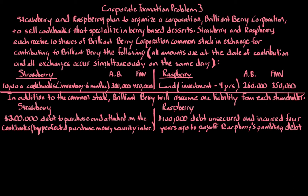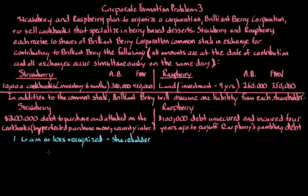This is a corporate formation or contribution problem. Whenever we have a corporate formation or contribution problem, we always have to go through our six steps. The first step is always to determine the gain or loss recognized by the transferor shareholder. Here we have two transferor shareholders — we have to look at both Strawberry and Raspberry. The second step is to determine the adjusted basis of stock and property received by those shareholders.